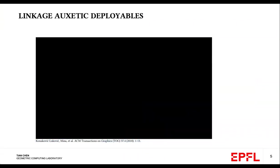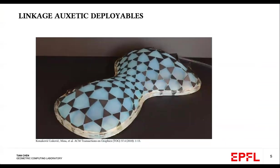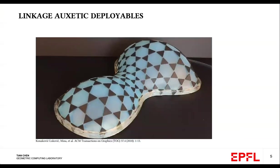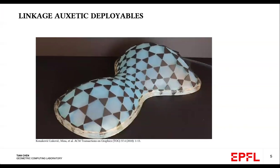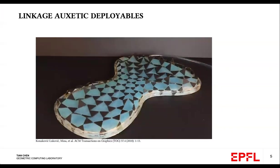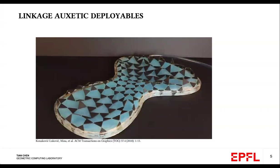There's a number of challenges associated with deployable structures. In this example, of auxetic deployables, pneumatic pressure is needed to keep the structure in 3D. Once the pressure is removed, the structure collapses back to its 2D state.